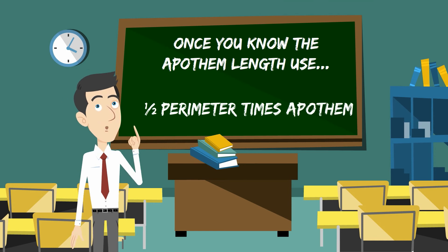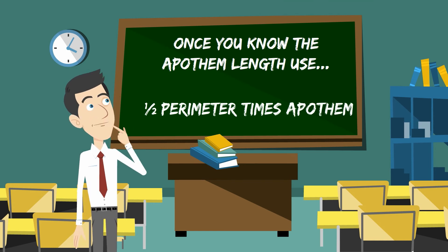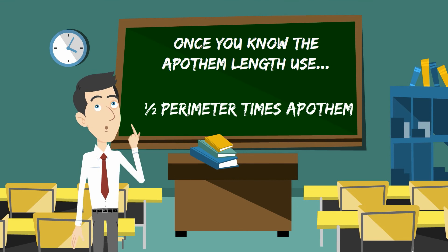Then once you have the apothem, you can plug that into the regular formula: 1/2 times perimeter times apothem. That will give you the area.